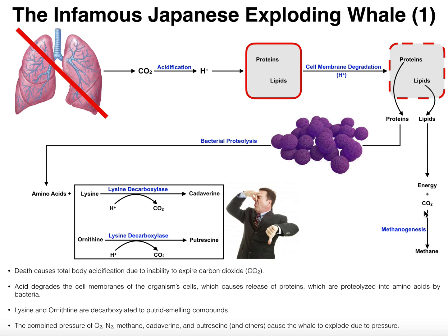Some of that carbon dioxide can be acidified into more acid, but carbon dioxide can also be utilized by specific bacteria which are methanogenic. Some bacteria can take carbon dioxide and fix it — in a different way than we see in photosynthesis — into a molecule called methane. Methane can be used by other bacteria, but we're going to see a buildup of methane inside the body of the dead organism. So one of the things contributing to the explosion is methane.